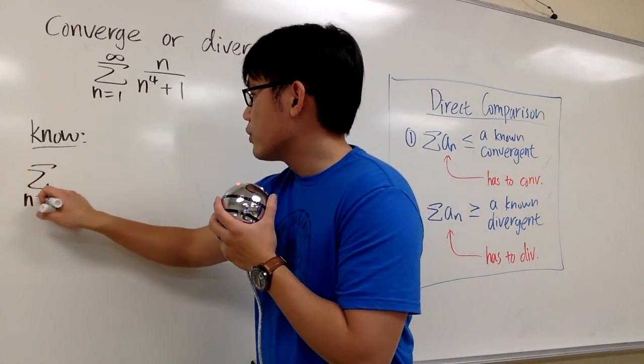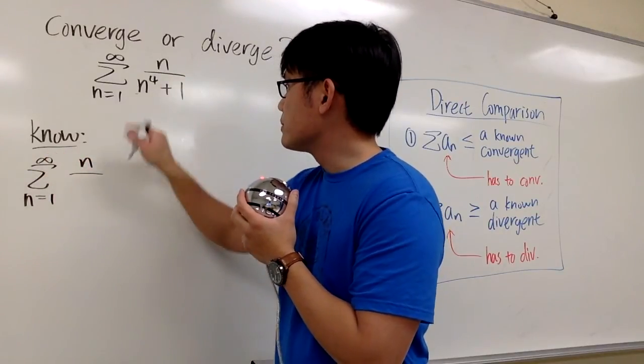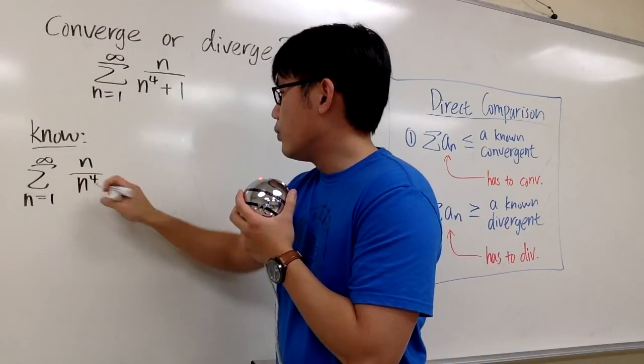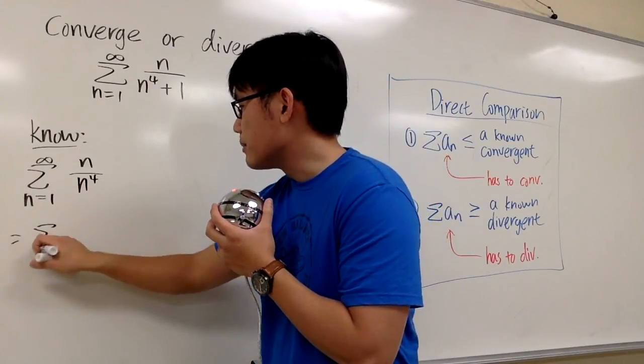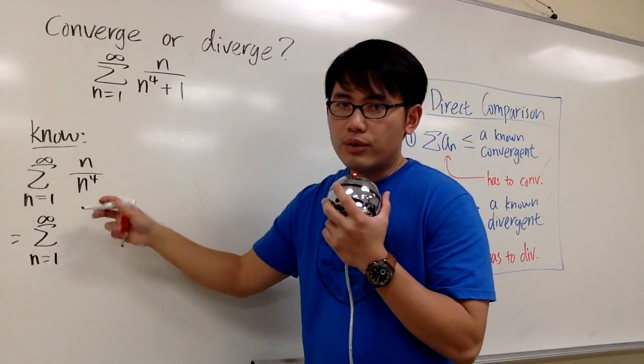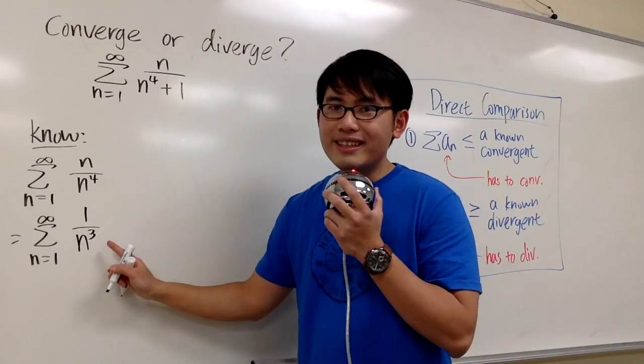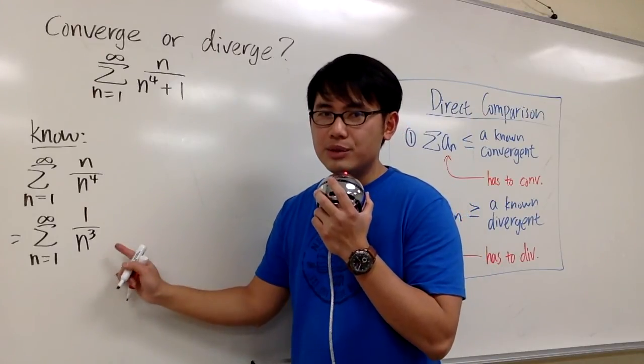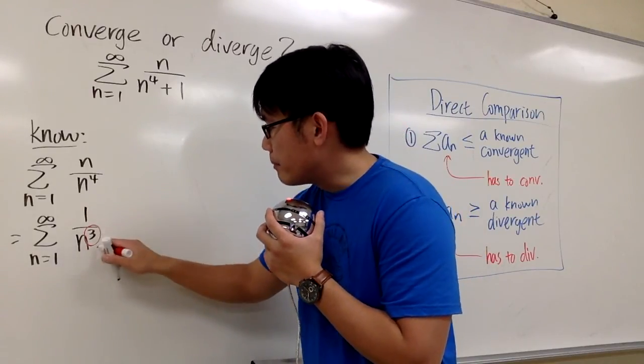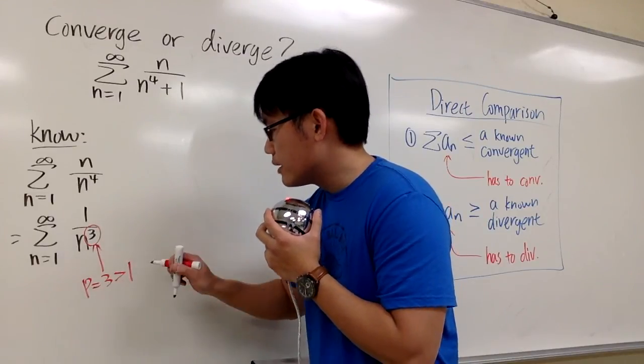So sigma when n goes from 1 to infinity, n over n to the fourth power, which is 1 over n to the third power. More importantly, this is a P series, and we know that P is going to be 3, and that's bigger than 1.